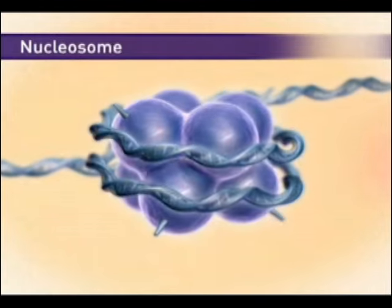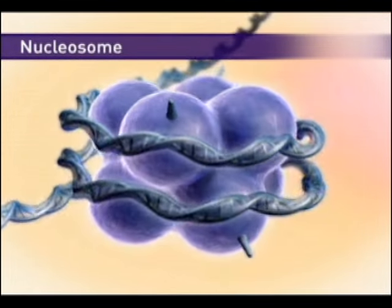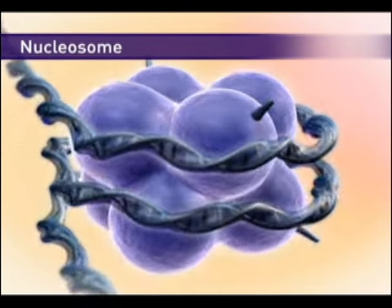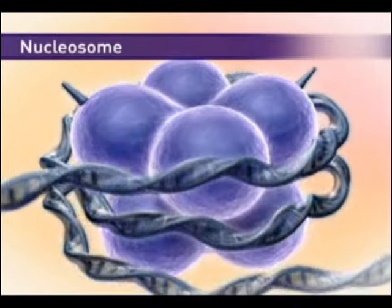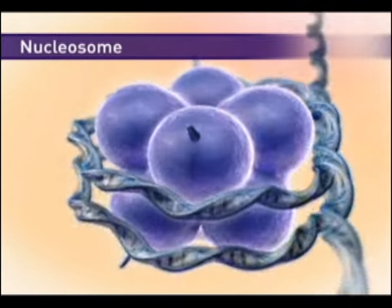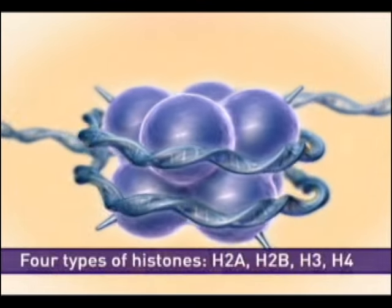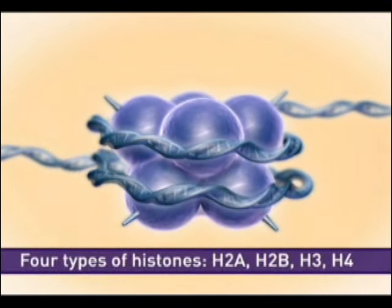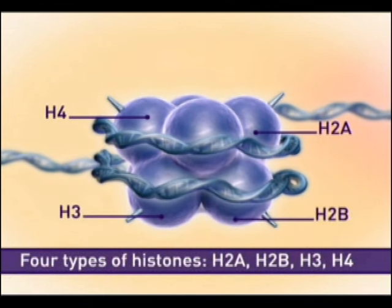Nucleosomes are made up of 146 base pairs of two superhelical turns of DNA wrapped around a core of eight histones. The histones are responsible for maintaining the chromatin's shape and structure.